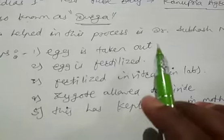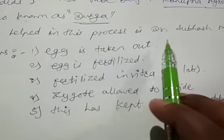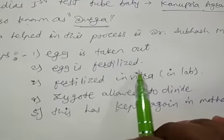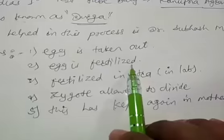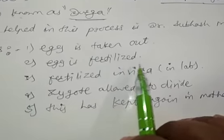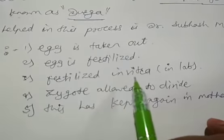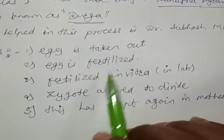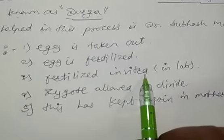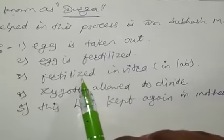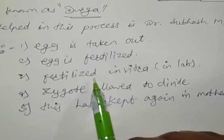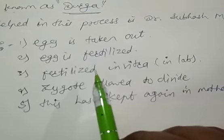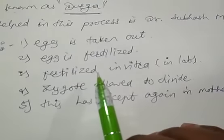The ovum is taken from the mother and the sperm is taken from the father. Then they are fused — that is fertilization. This fertilization process does not happen inside the body; it happens inside the laboratory, which is called in vitro. So it is done under in vitro, meaning laboratory conditions, where all the same conditions are provided to the fertilized egg and sperm.